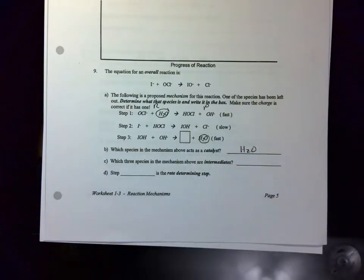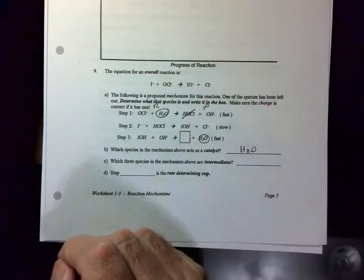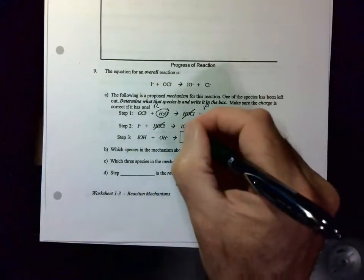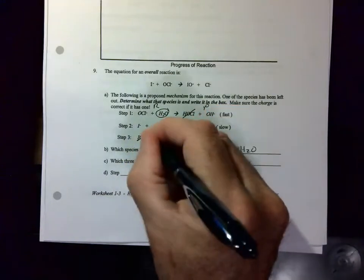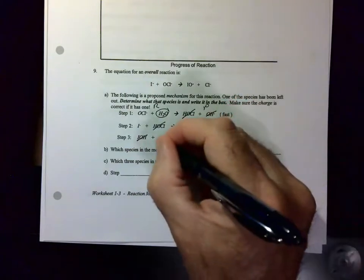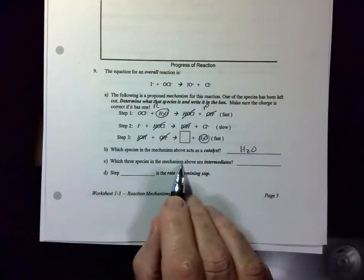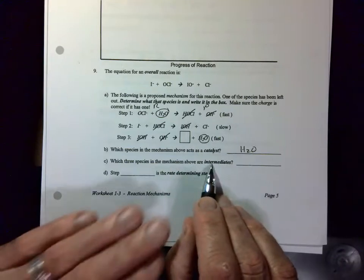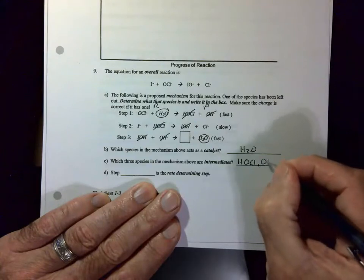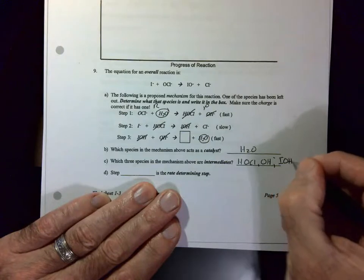Let's look for intermediates. Intermediates can be found being produced on the product side and then used up on the reactant side. Let's see if there's anything else here. So we're getting lots going on here. We've got the OH. So which three species in the mechanism above are intermediates? We have HOCl, we have OH-, we have IOH.